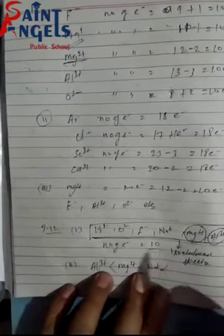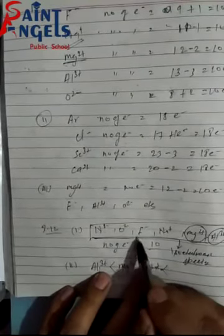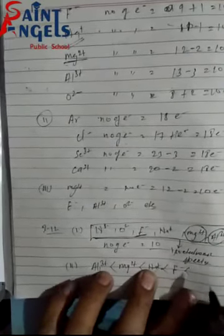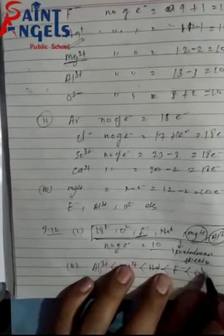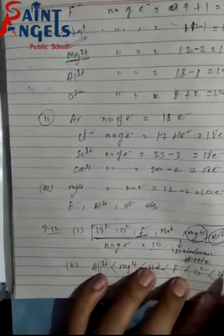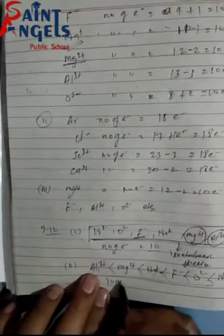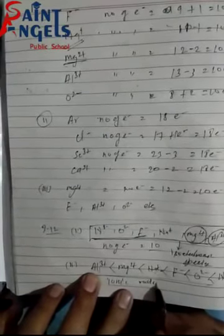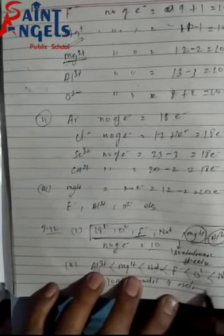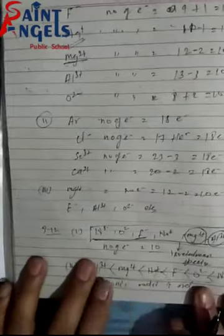Nuclear charge जैसे-जैसे बढ़ता है, radii increase होती जाती है। Negative ions में: F− का radii सबसे कम, फिर O2− (2 minus charge), फिर N3− (3 minus charge) का सबसे ज्यादा। तो increasing order of ionic radii है: Al3+ < Mg2+ < Na+ < F− < O2− < N3−। इस तरह से ionic radii को arrange किया जा सकता है। Thank you.